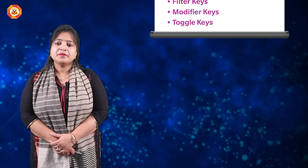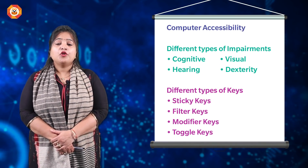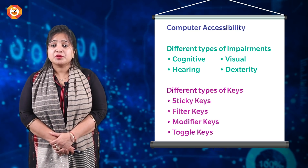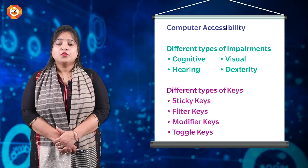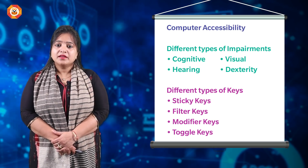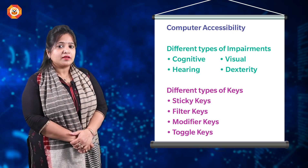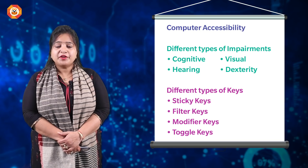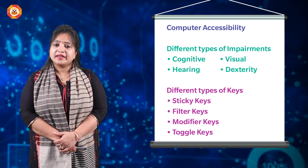Let's start with chapter number two, called Web Applications. In this chapter you will learn about different types of impairments — four types: cognitive, dexterity, visual, and hearing. Then you will learn different types of keys: sticky keys, filter keys, modifier keys, and toggle keys. Note these very carefully and remember their definitions.